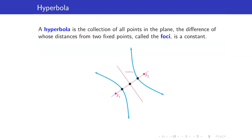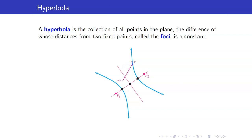In this lesson, we are going to study the last of our conic sections: hyperbolas. A hyperbola is the collection of all points in the plane, the difference of whose distances from two fixed points called the foci is a constant. The definition says that if we get any point on the hyperbola, the difference of the distance from the first focus and the distance from the second focus is always a constant.